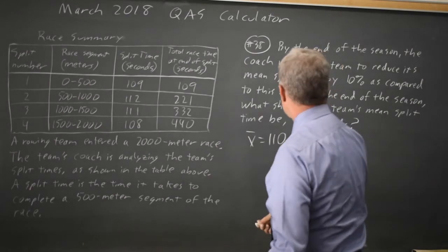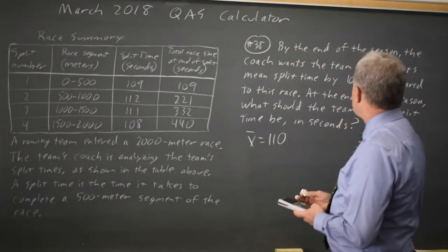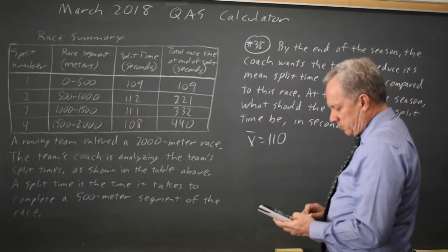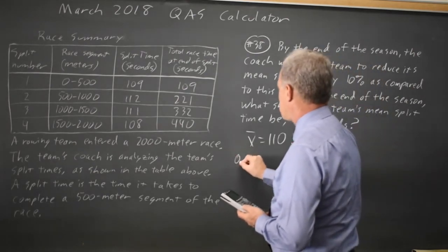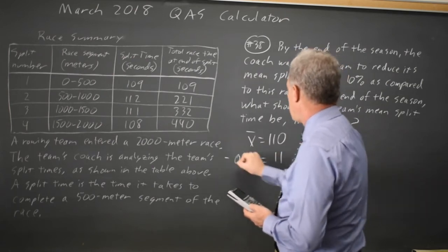The mean is 110 and I want to reduce this by 10%. So 110 times 0.1 is 11 and I want to reduce by that.